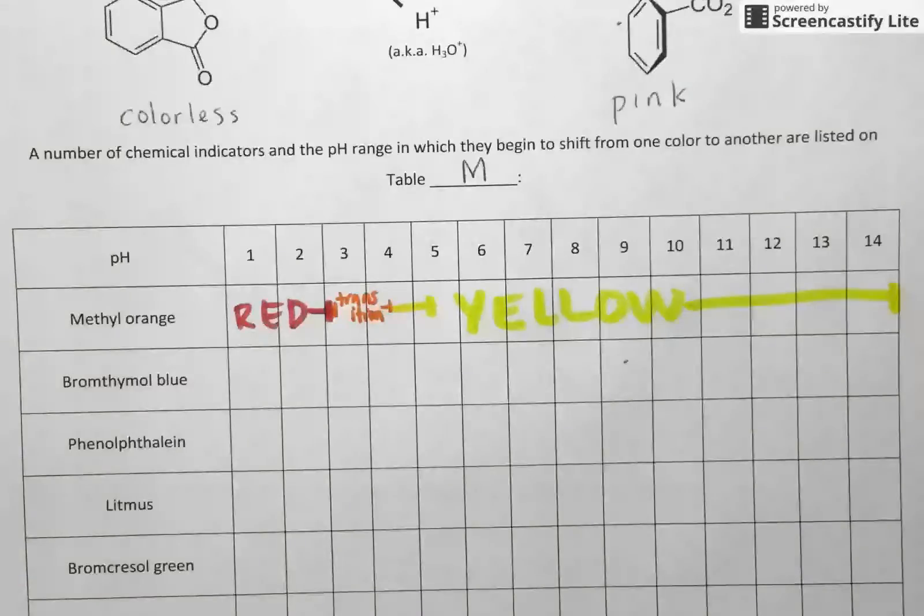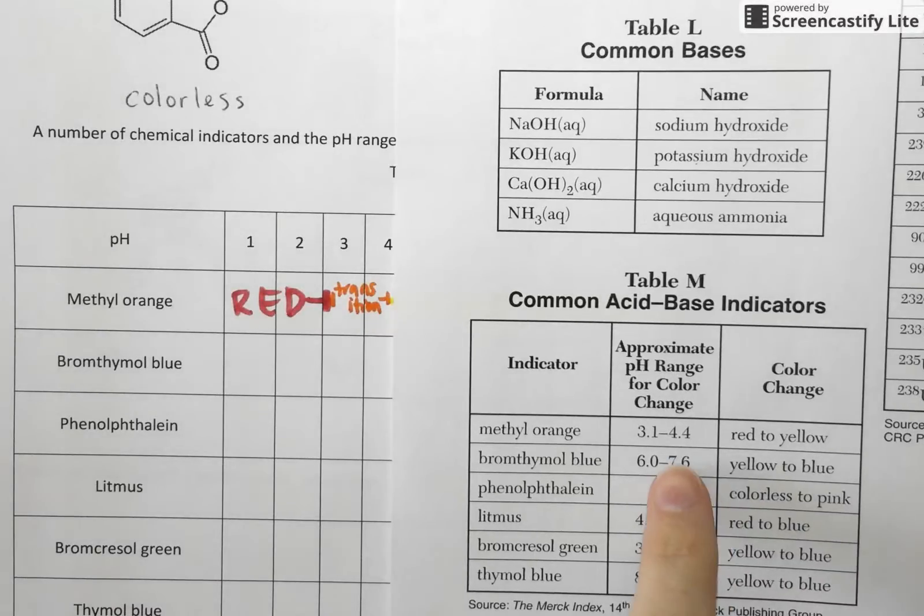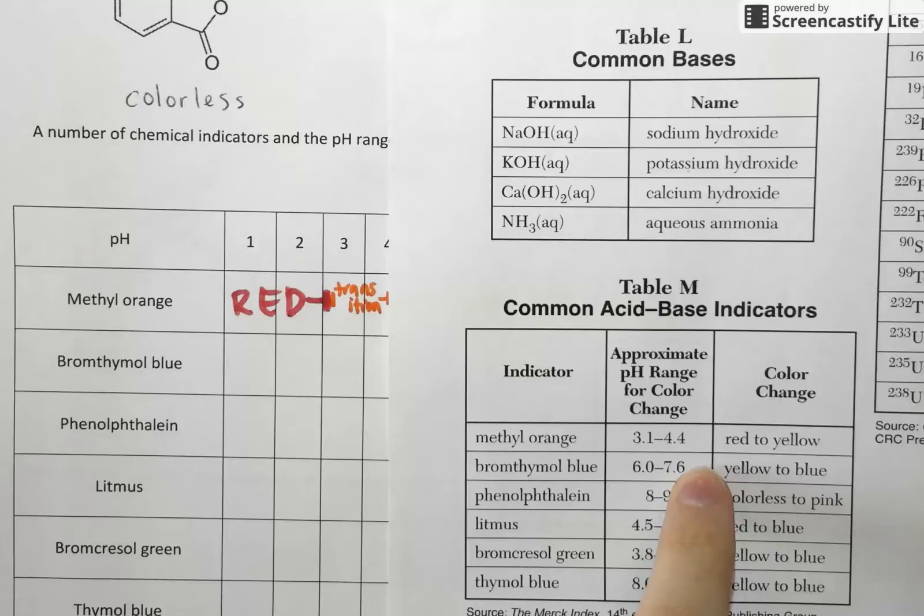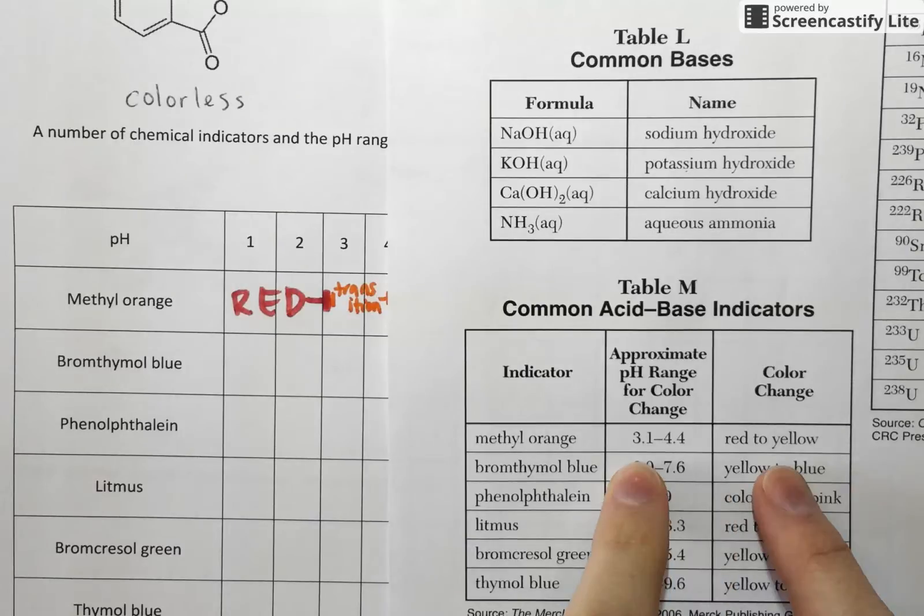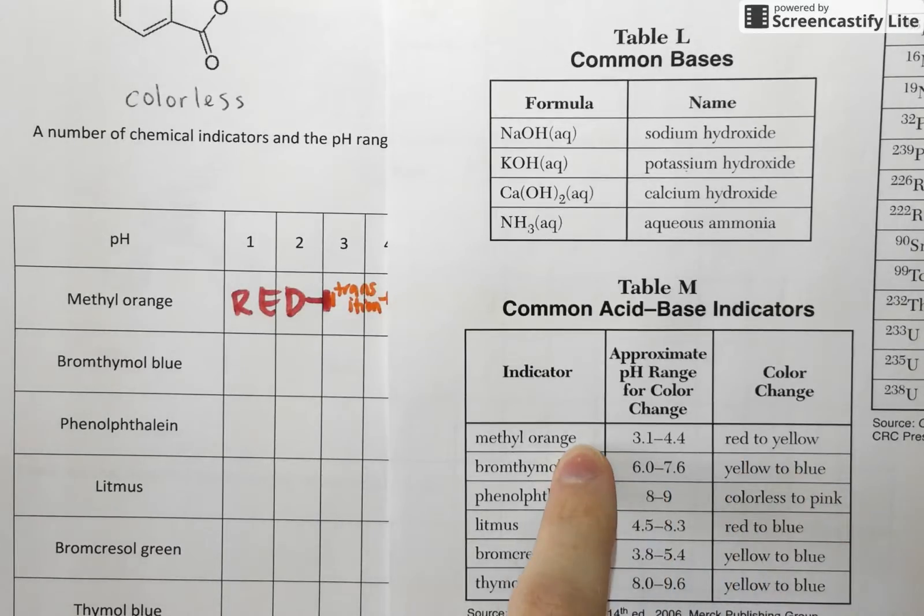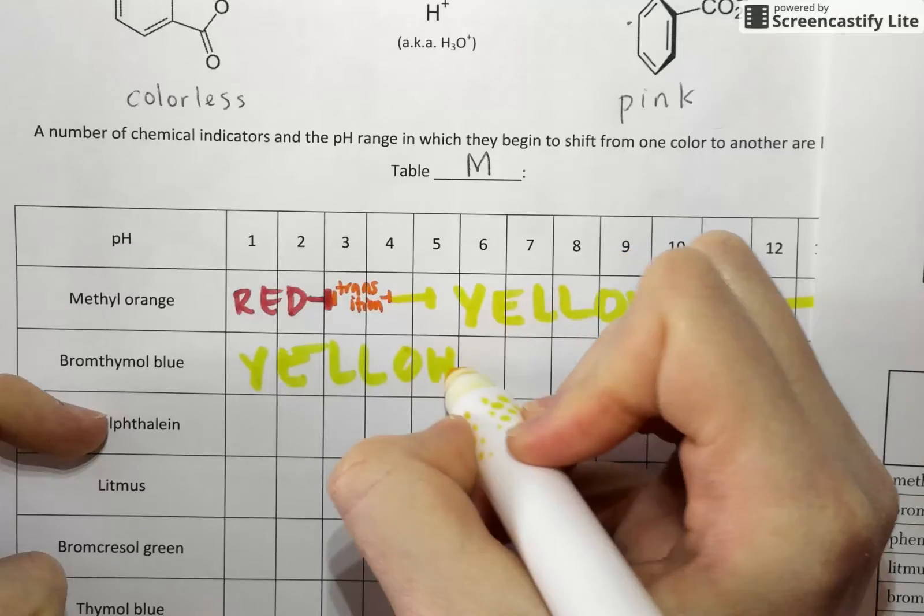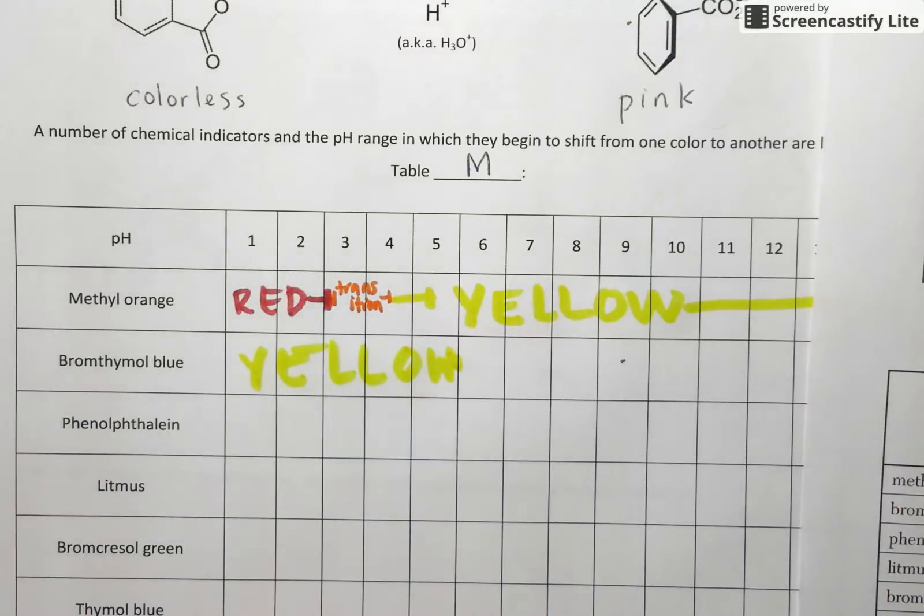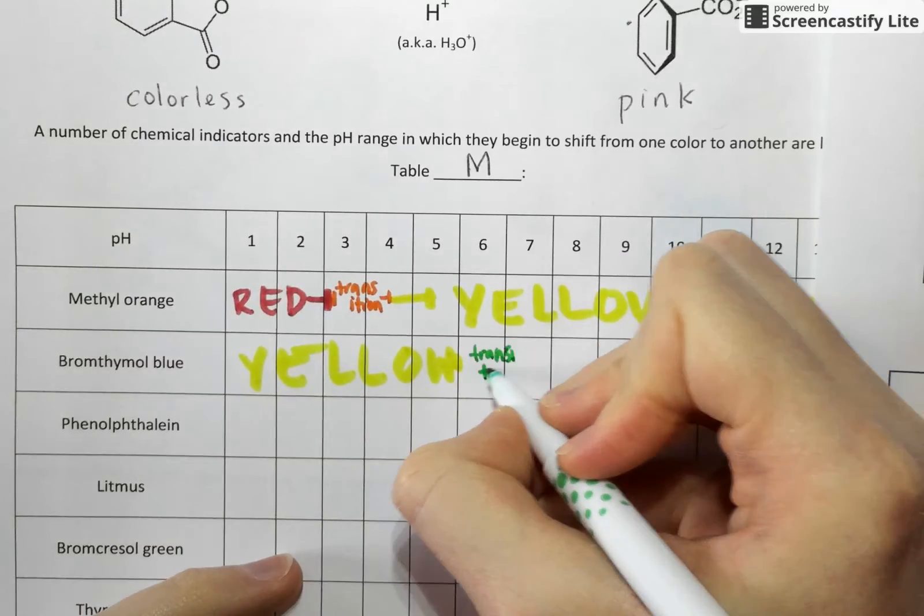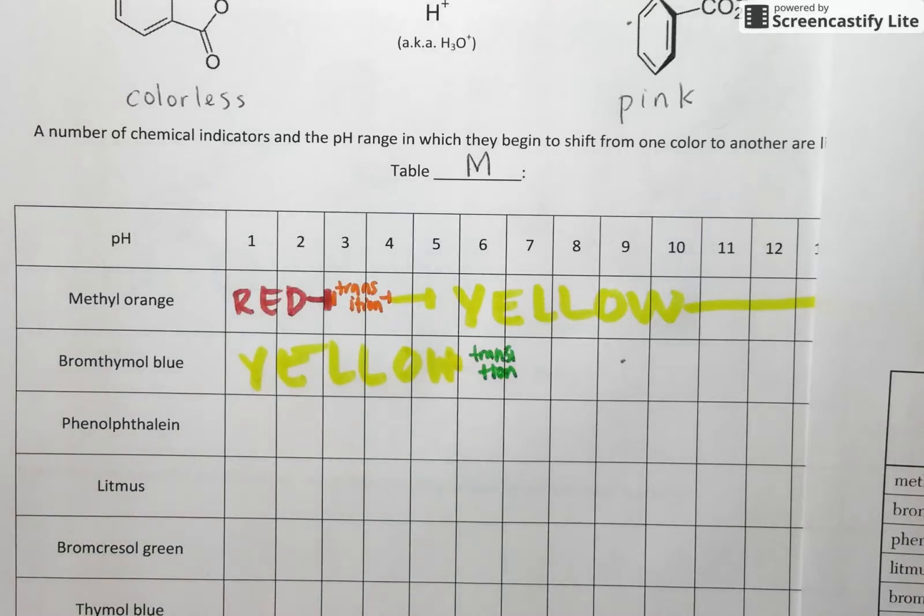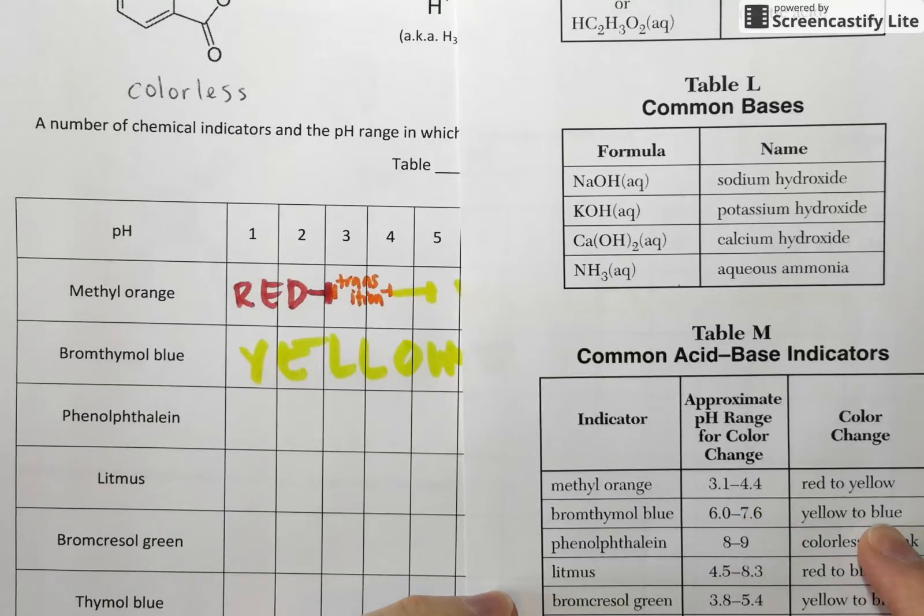We can use those same rules to figure out what color all these other indicators are going to be. Bromthymol blue has a pH color change range of 6 to 7.6, and that shows when it's making its transition between yellow and blue. So anything to the left of 6 is going to be the color on the left, or yellow. So up to 6.0, Bromthymol blue is yellow in color. Between 6 and 7.6 is its transition range. And anything to the right of 7.6, so 7.6 and up, Bromthymol blue changes a nice blue color.